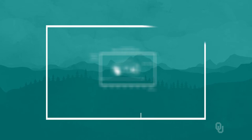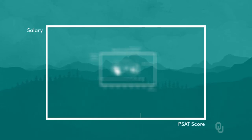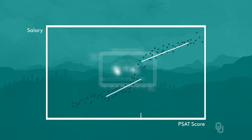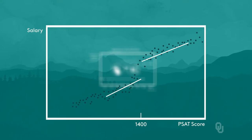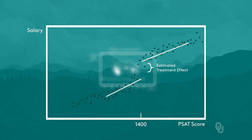Now consider a graph with salary at first job after college on the vertical axis and PSAT score again on the horizontal. To test whether the scholarship increases earnings, we basically look for a discontinuous jump in earnings at the cutoff score of 1400. In other words, does the discontinuous jump in the probability of treatment produce a discontinuous jump in post-college earnings? If so, we attribute the jump as being caused by the scholarship. The estimated treatment effect is simply the size of the jump.